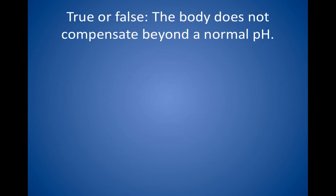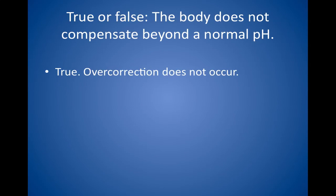True or false: the body does not compensate beyond a normal pH. True. For example, a patient with metabolic acidosis will eliminate carbon dioxide to help restore a normal pH. However, if respiratory alkalosis is a compensatory mechanism and not a separate primary disturbance, then the pH will not correct to greater than 7.4. Overcorrection does not occur.